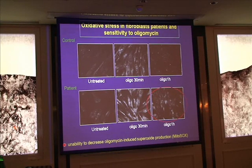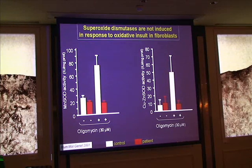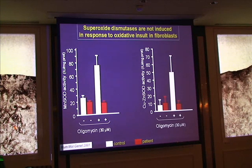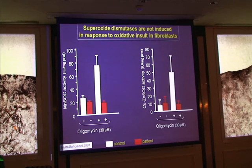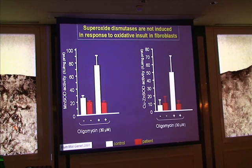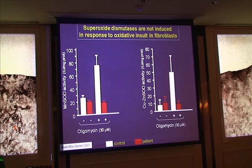We went further and showed that the reason for this is that the superoxide dismutase enzymes — the enzymes that normally cope with superoxide — are not expressed or not overexpressed in frataxin-depleted cells. In control cells, superoxide dismutase is induced in response to the oxidative agent. But in frataxin-depleted cells, there is no induction of superoxide dismutase at all, which explains why superoxide remains in the cell. This is true for both the mitochondrial enzyme and the copper-zinc enzyme, which is also partly present in the mitochondria.